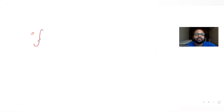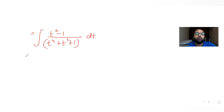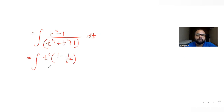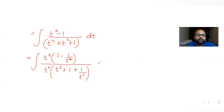Now let's solve this integral: (t squared minus 1) upon (t raised to 4 plus t squared plus 1) dt. Taking t squared common from both numerator and denominator, the numerator becomes 1 minus 1 by t squared, and the denominator becomes t squared times (t squared plus 1 plus 1 by t squared). Cancelling t squared from both sides, we get the integral of (1 minus 1 by t squared) upon (t squared plus 1 plus 1 by t squared).